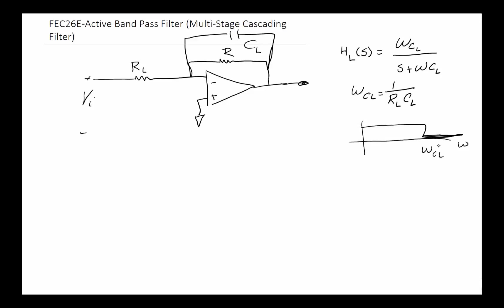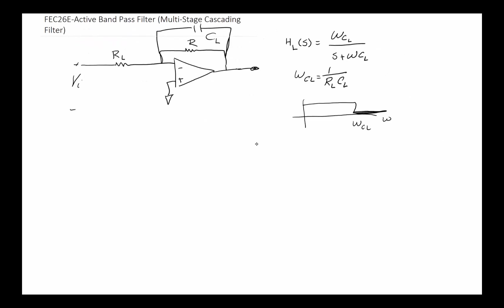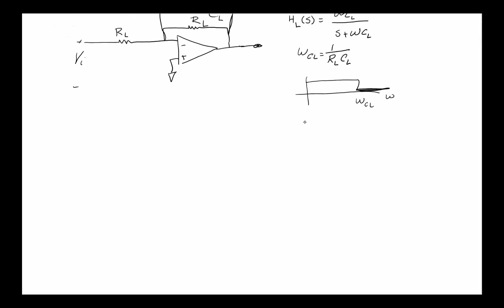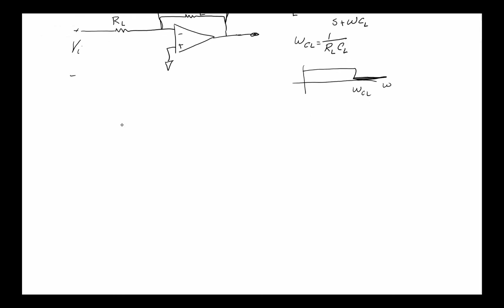If I go to the next item and draw a high pass filter, the high pass filter would be a resistor going through a capacitor and then a resistor, and the op amp will sit right here.